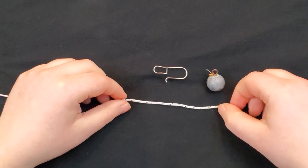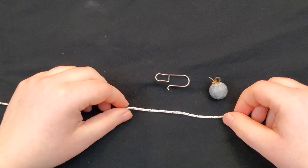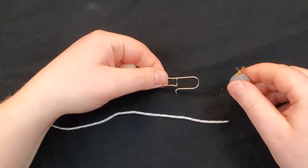The other knot that I use in my leader setup is the improved clinch knot, and that's to attach the snap which then attaches to my weight.